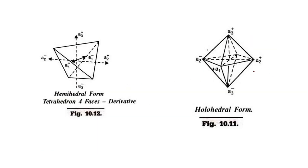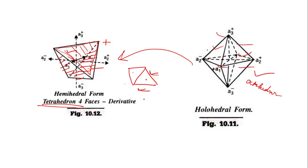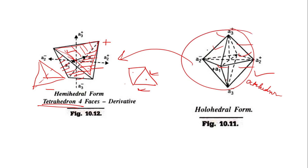Looking at the diagram: this is the holohedral form of the octahedron with eight faces, and here is the tetrahedron — its hemihedral derivative — with four faces. There is a positive hemihedral form and a negative hemihedral form. If one is the positive, the other is similar but inverted as the negative. When you combine both the positive and negative hemihedral forms, you get back the whole octahedron.